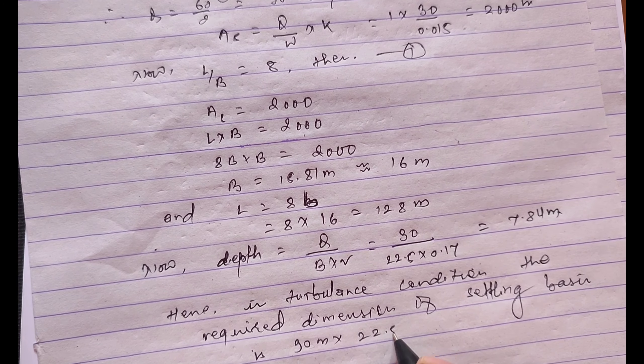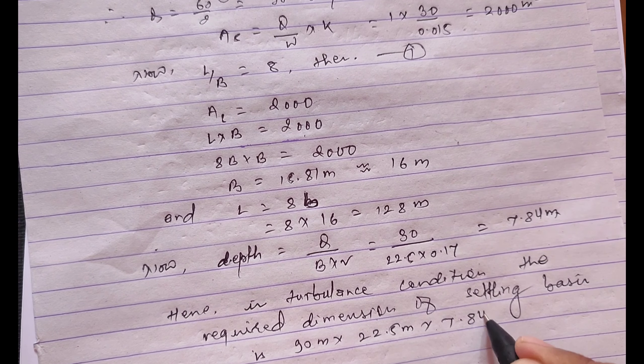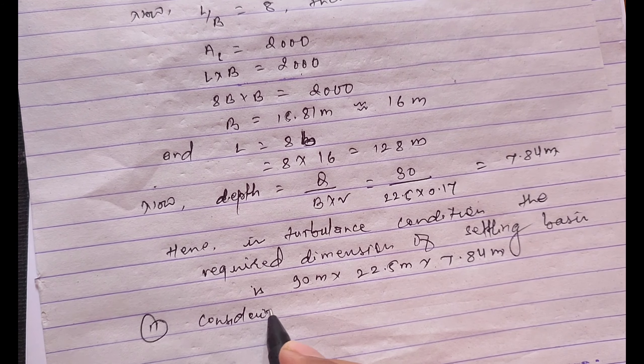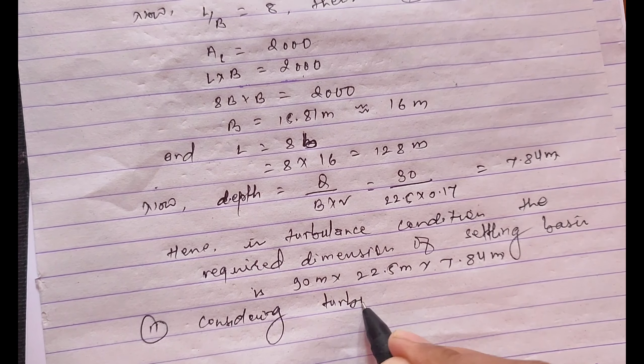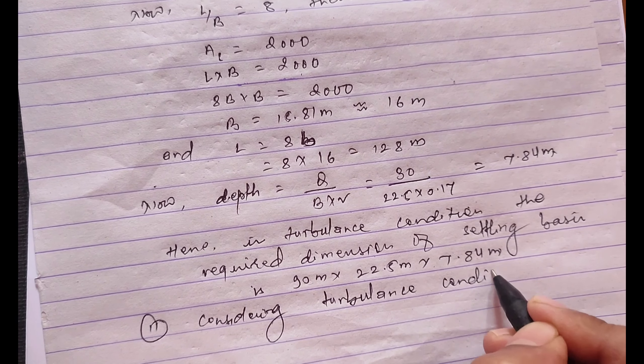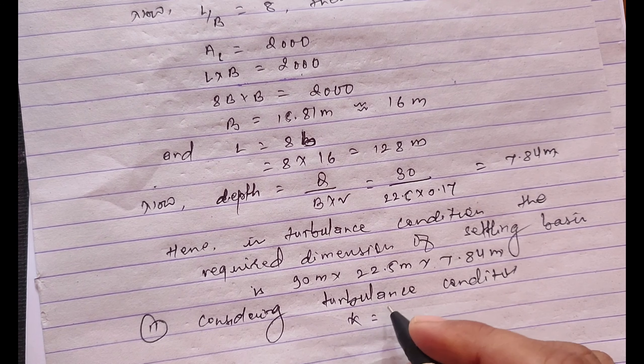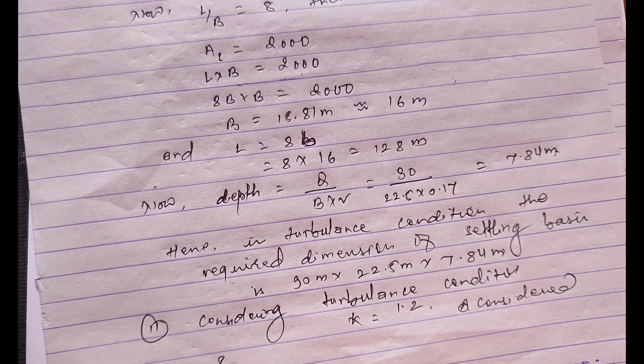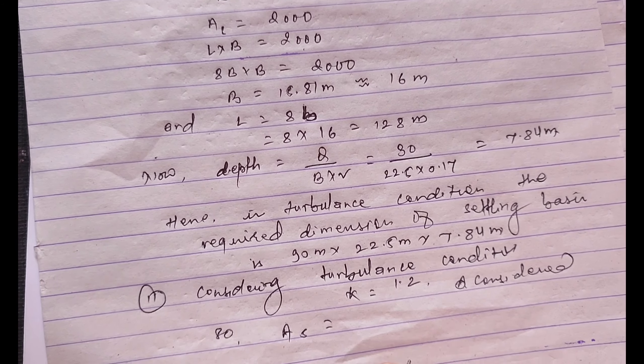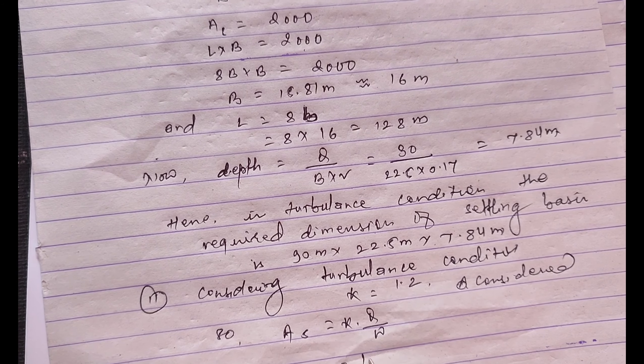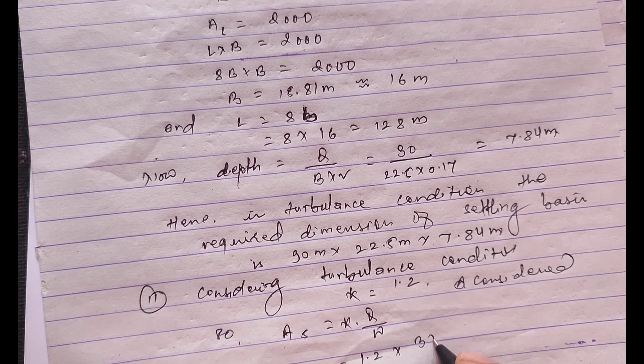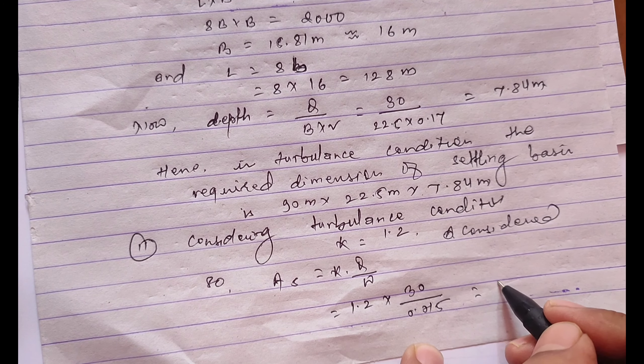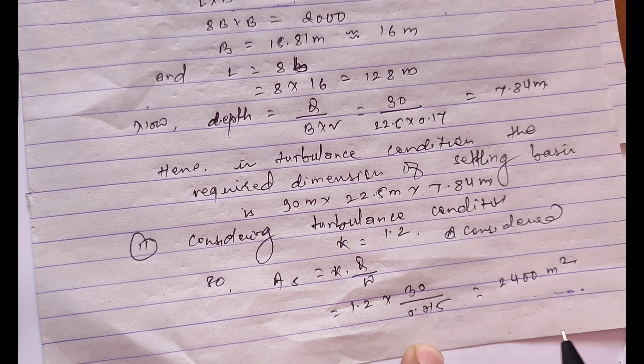Now we'll go to the case 2, that is turbulence condition where the value of k turbulence factor equals 1.2. So first we'll calculate the surface area As equals k times Q divided by w, where the value of k is 1.2 and the value of Q is 30 divided by 0.015. The surface area for this is 2400 meter square.